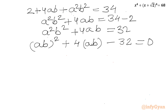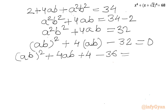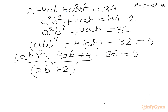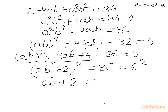Now we have to solve this quadratic equation. Using the factorization method: (ab)² + 4ab - 32 = 0. We can split this as (ab)² + 4ab + 4 - 36 = 0.